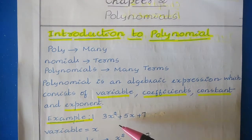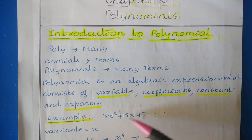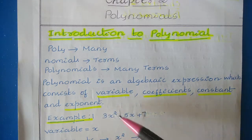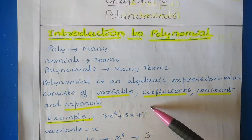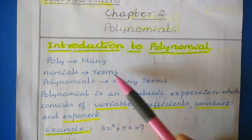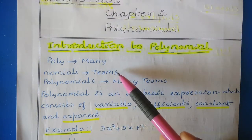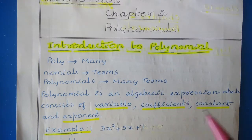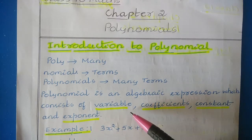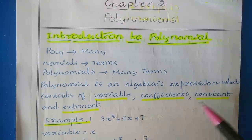Here I have taken 3x² + 5x + 7, which we can call a polynomial. It has one term, a second term, and a third term — so here we have three terms. Poly means many and nominal means terms, so a collection of many terms written together is a polynomial, where we have a variable, coefficient, constant, and exponent.